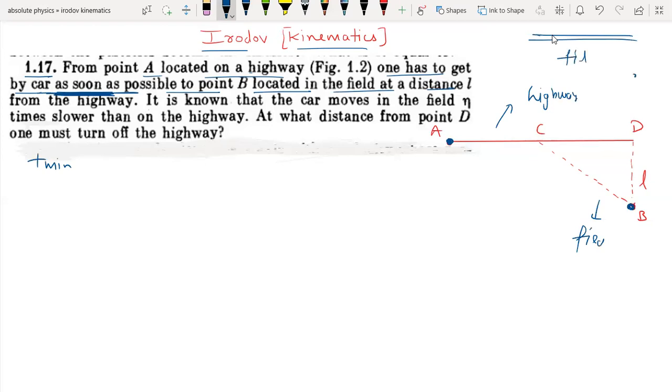It is known that the car moves in the field n times slower than on the highway, which means the speed in the field is n times less. If I say the speed on the highway is V, then the speed in the field is V/n.